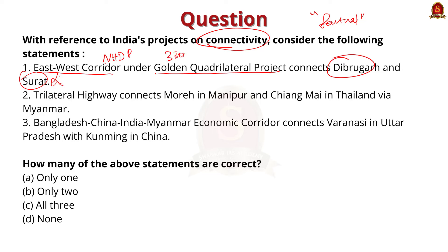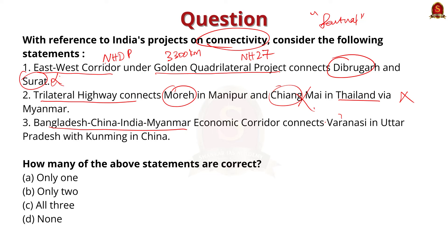The second statement says the Trilateral Highway connects Moreh in Manipur and Chiang Mai in Thailand via Myanmar — this is also incorrect because the Trilateral Highway aims to connect Moreh in Manipur with Mae Sot in Thailand via Myanmar. The third statement says the Bangladesh-China-India-Myanmar (BCIM) Economic Corridor connects Varanasi in Uttar Pradesh with Kunming in China — this is also incorrect. The BCIM is a proposed corridor connecting Kunming in China with Kolkata in India, passing through Myanmar and Bangladesh. Varanasi is not directly connected to this corridor. So the correct answer is option D: none.